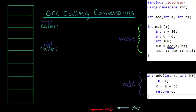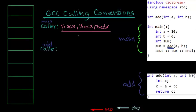The GCC calling conventions tell us that if you're the caller, you have to make sure that the registers EAX, ECX, and EDX do not have live values when the function you're calling is entered. Basically, main has to save the values in these registers before it calls a function, because the callee can do whatever it wants with them. It's a rule to always save these values before you call a function.